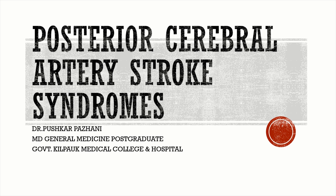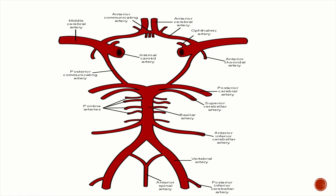Today we're going to be talking about posterior cerebral artery stroke syndromes. The two vertebral arteries form the basilar artery, which bifurcates into the two posterior cerebral arteries. The posterior cerebral artery is connected to the internal carotid artery via the posterior communicating artery, the PCOM. The part of the PCA proximal to the PCOM is the P1 segment, and the part distal to the PCOM is the P2 segment.